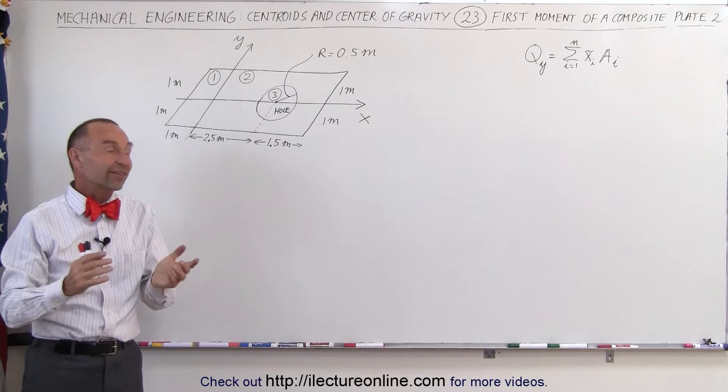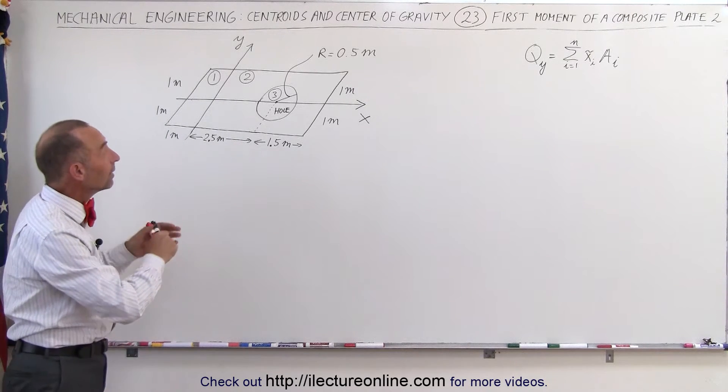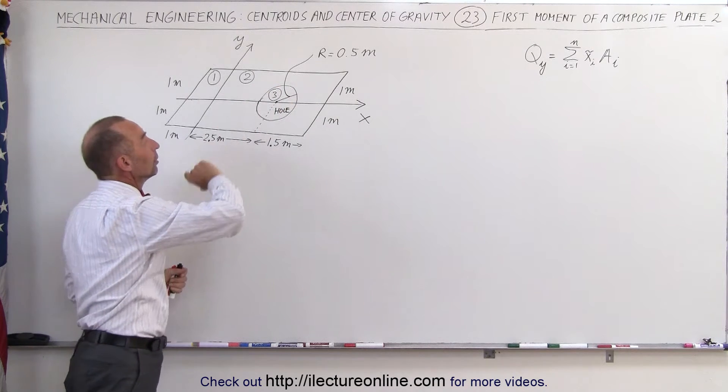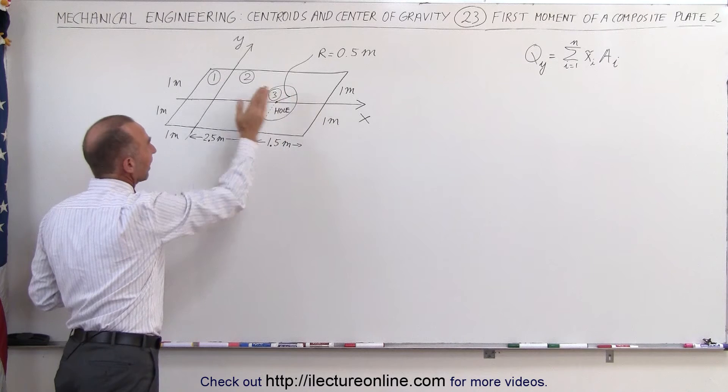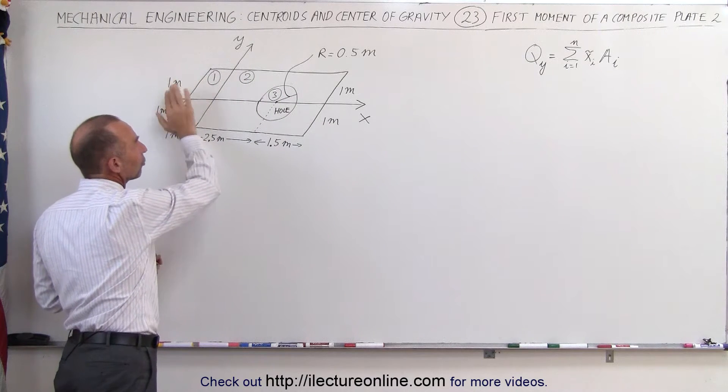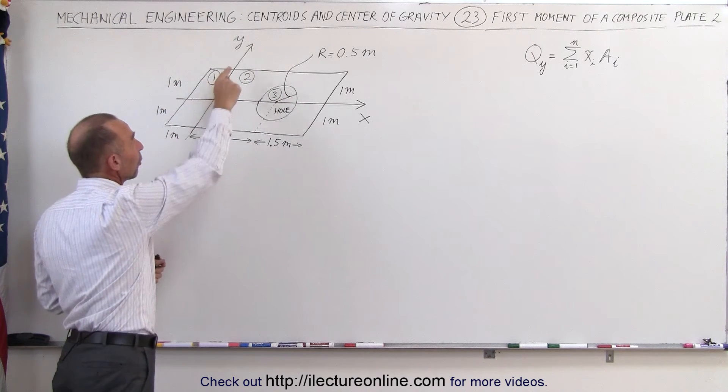Welcome to our lecture online. Here in our next example we have a composite plate but we do have a hole in it. Notice that it's situated about the y-axis where most of the mass is on the right side, less mass on the left side. So we do have a net moment here about the y-axis.